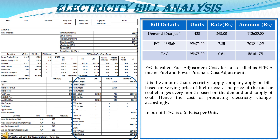Now the FAC section — Fuel Adjustment Cost, also called FVPCA: Fuel and Power Purchase Cost Adjustment. The electricity supply company applies this FAC in all bills because of the varying price of fuel or coal. The price of fuel or coal changes every month based on demand and supply, so the cost of producing electricity changes accordingly. In our bill, the FAC is 0.61 paise per unit. Multiplying 0.61 by 95,675 units, we get total FAC charges of 58,361.75 rupees.